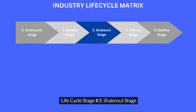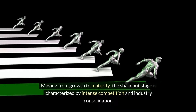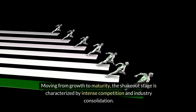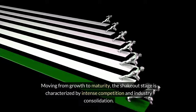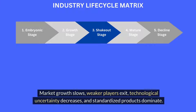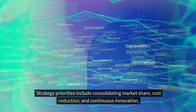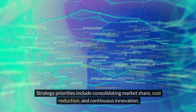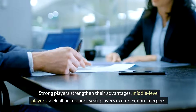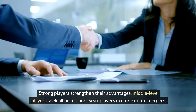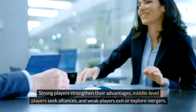Life cycle stage number three — the shakeout stage. Moving from growth to maturity, the shakeout stage is characterized by intense competition and industry consolidation. Market growth slows, weaker players exit, technological uncertainty decreases, and standardized products dominate. Strategy priorities include consolidating market share, cost reduction, and continuous innovation. Strong players strengthen their advantages, middle-level players seek alliances, and weak players exit or explore mergers.